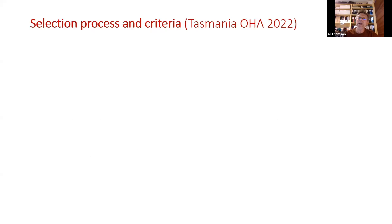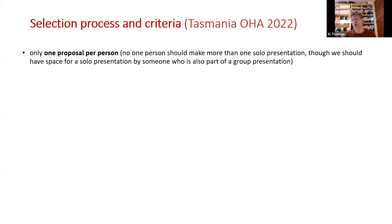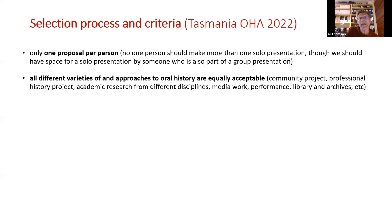These are the selection criteria we used for the last conference and they'll be pretty similar this time. First: one proposal per person — don't put in five proposals hoping to get lucky because we're going to be oversubscribed. The only possibility is you might do a solo presentation but also be a member of a group presentation. We want to make clear we're interested in all varieties and approaches to oral history — community projects, professional, academic research, media work, performance work, libraries and archives — all equally acceptable.